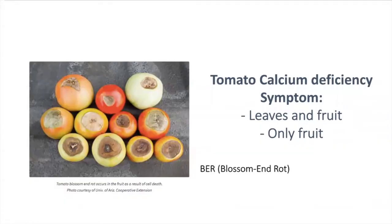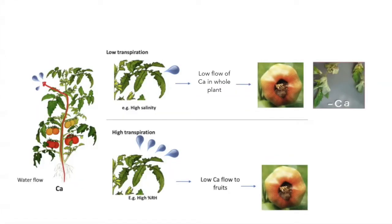Calcium deficiency can also be spotted in fruits. This symptom can be common in tomato greenhouses. Here is a clear example of calcium deficiency in tomato fruits. If you have seen this before, you probably know we call this blossom end rot. Calcium deficiency in tomato can be spotted just in fruits, or can also be spotted in leaves and fruits. Remember, calcium is a passive nutrient — it moves within the water. Any problem with water uptake can affect how different plant organs are receiving calcium.